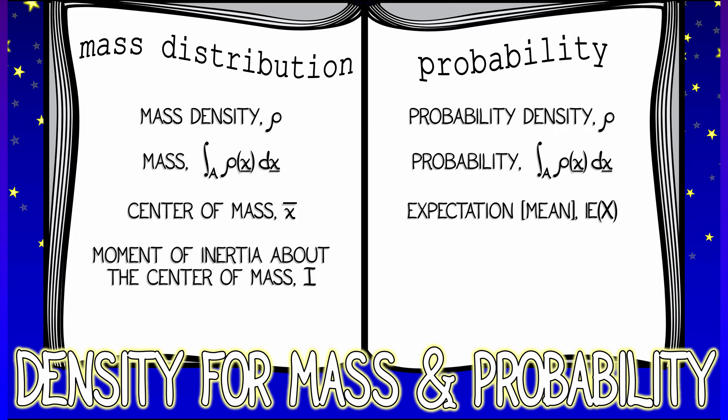The moment of inertia, capital I, about the center of mass of an object. What is that? That's the integral of the distance to the center of mass squared. Wait a minute, that's exactly what we did in defining the variance v of x. We took the distance to the expectation, squared it, integrated that with respect to density.